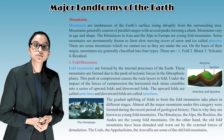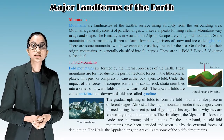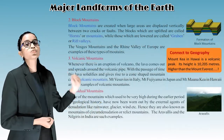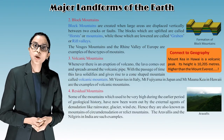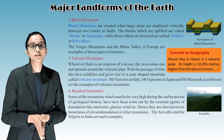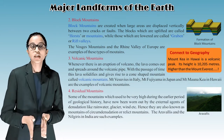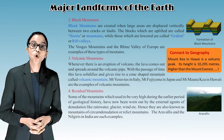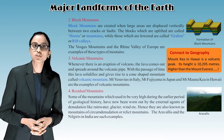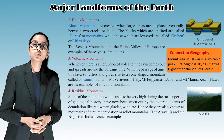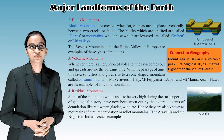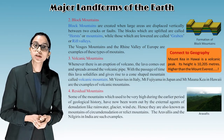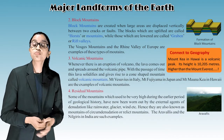The Urals, the Appalachians, and the Aravallis are some of the old fold mountains. Block mountains are created when large areas are displaced vertically between two cracks or faults. The blocks which are uplifted are called horsts, while those which are lowered are called grabens or rift valleys. The Vosges mountains and the Rhine valley of Europe are examples of block mountains.